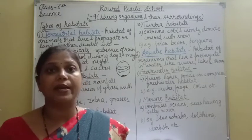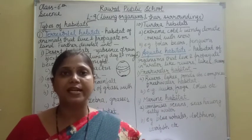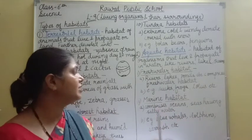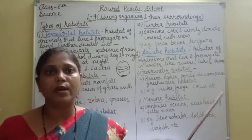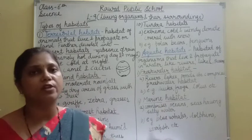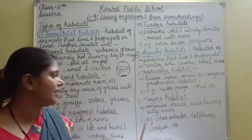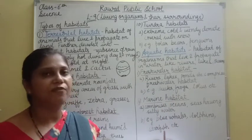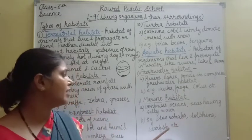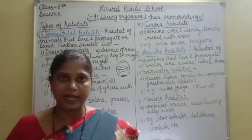Next is marine habitat. Marine habitat में large water bodies होती हैं like oceans and seas. Sea comprises oceans and seas having salty water — जो समुद्र का पानी होता है वो salty होता है. तो जो plants और animals salty water में survive कर सकते हैं, they come under marine habitat. Examples: blue whales, dolphins, starfish — यह सब oceans और seas में मिलती हैं. This is all about aquatic habitat.